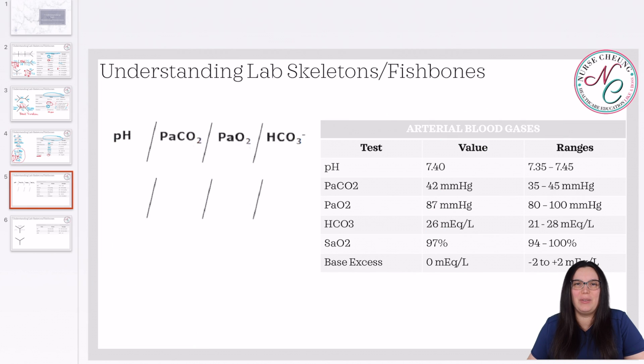So the next fishbone that we're going to look at is our arterial blood gas skeleton. Now we just did an entire series of what ABGs are, how to interpret them, what each blood gas means, how we treat, how the patient's going to look. It's just a whole all encompassing education about ABGs. So if you haven't checked that out, I highly recommend that you check that out because it's extremely informative and something that's going to be great for you to know for your practice.